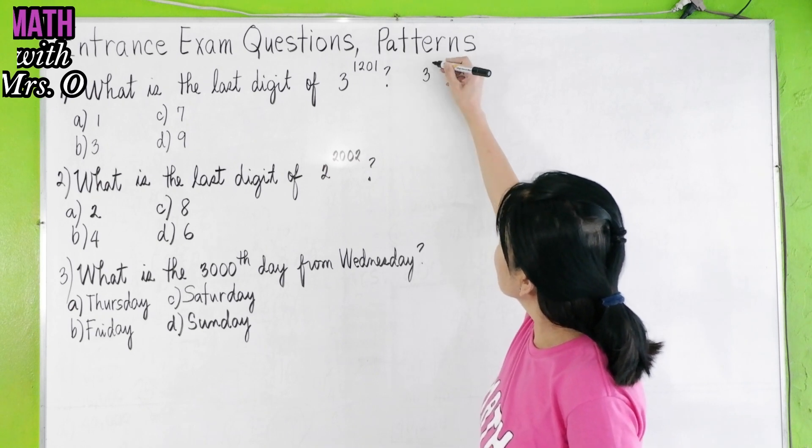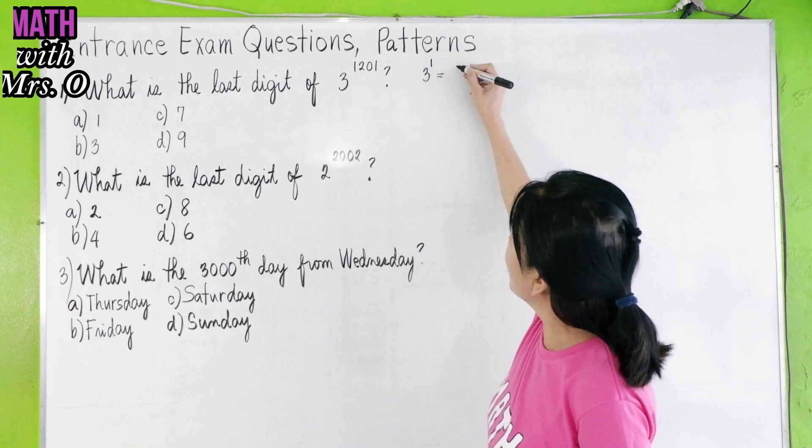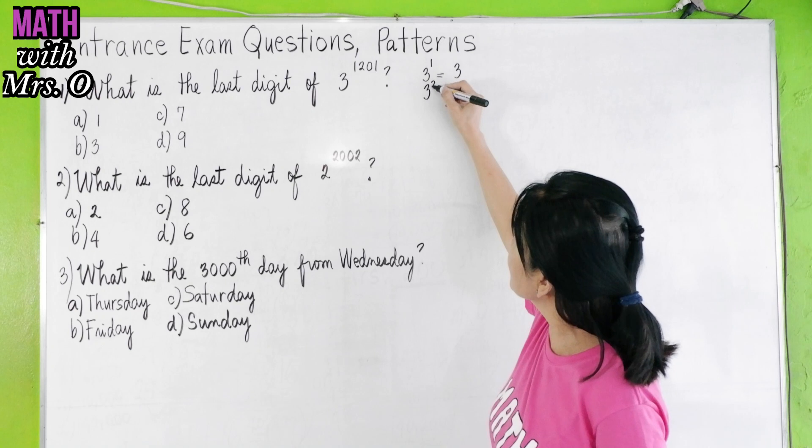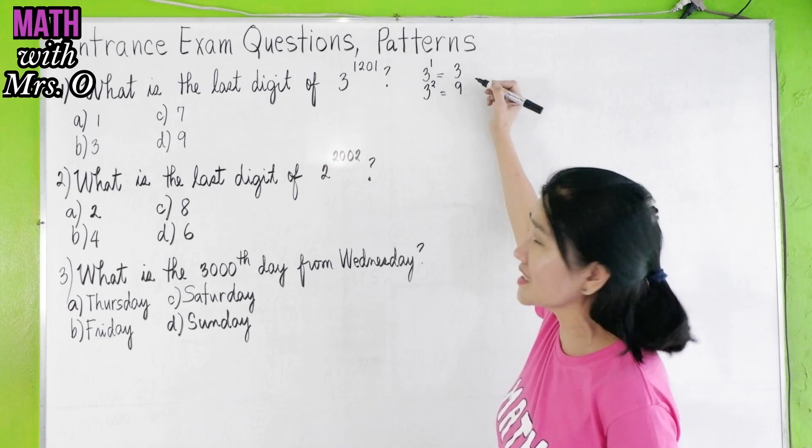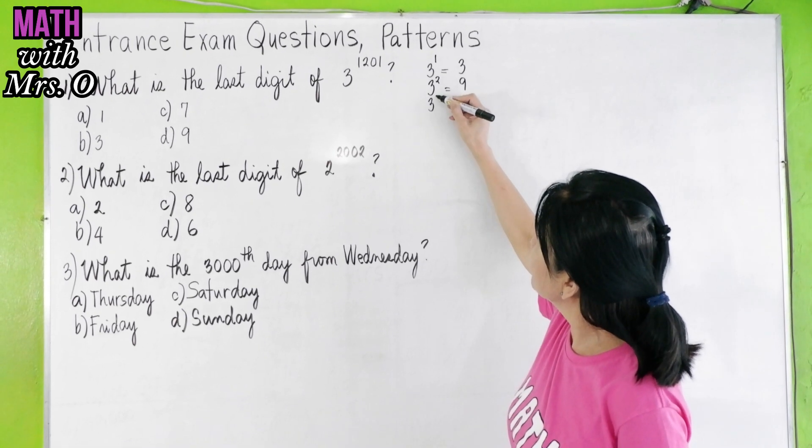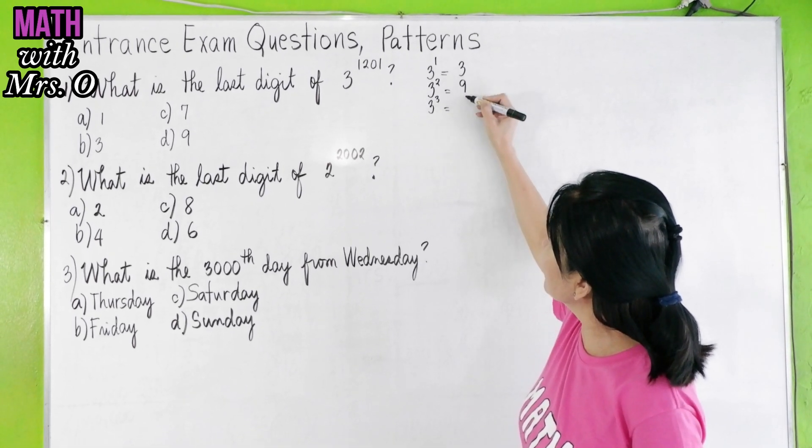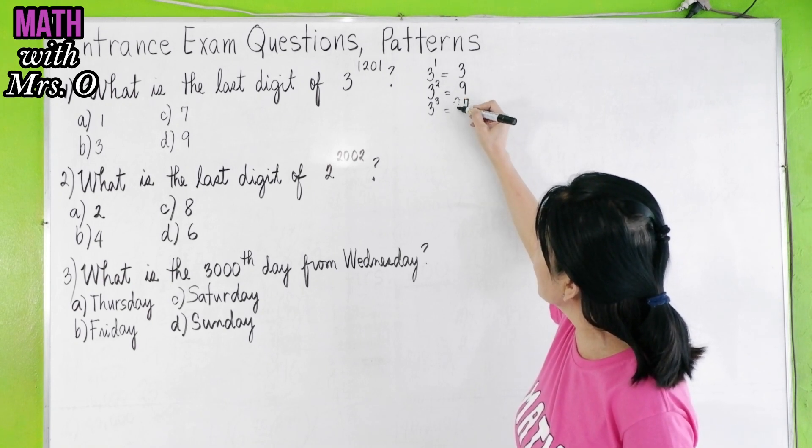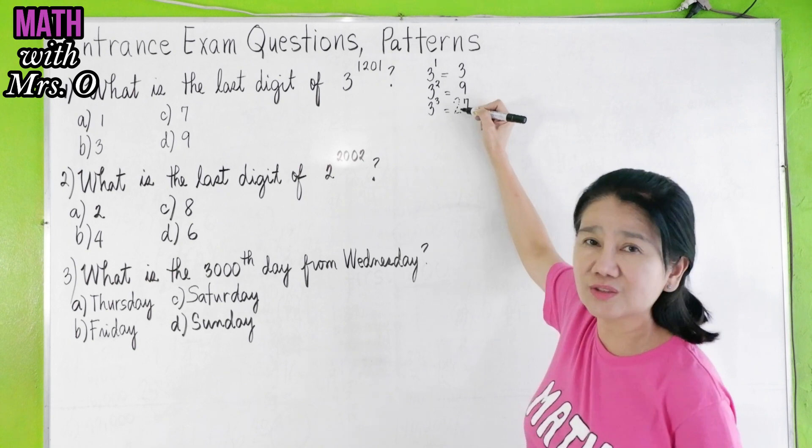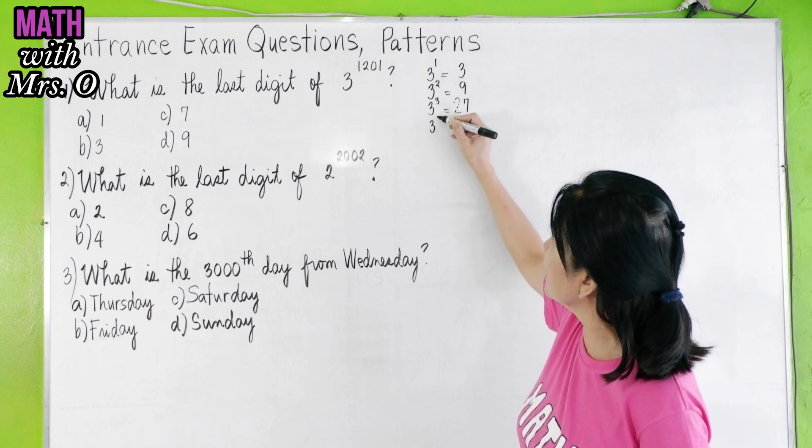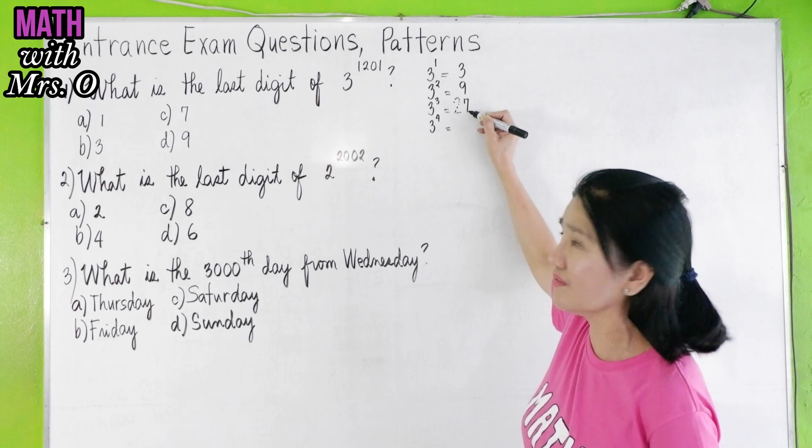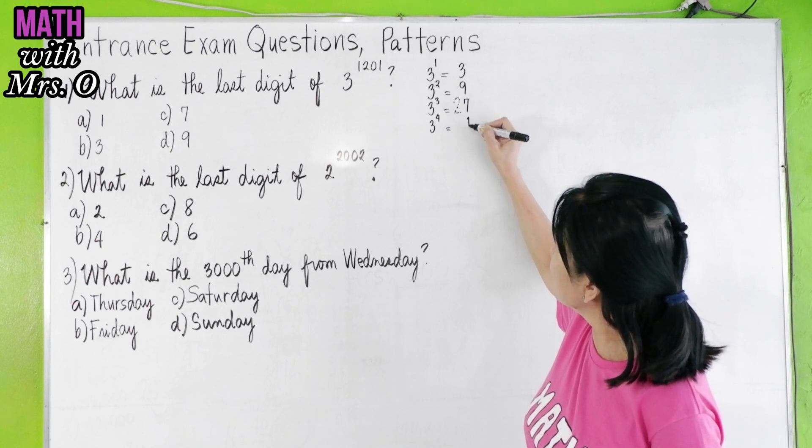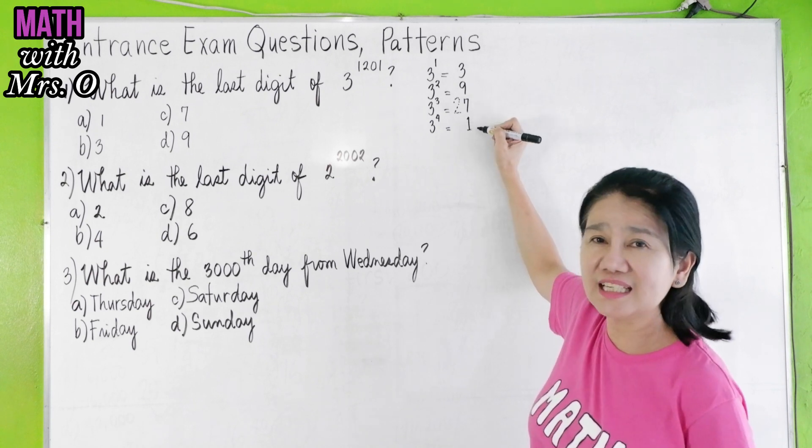Let us see what the pattern is. 3 to the 1 gives you 3. 3 squared is 3 times 3, so this is 9. 3 cubed, or 9 times 3, is 27. We're only interested in the last digit, so we don't have to write 2 here. The last digit is 7. 27 times 3 is 81, so the last digit is 1.